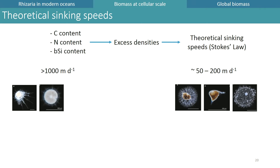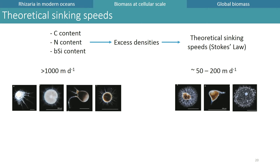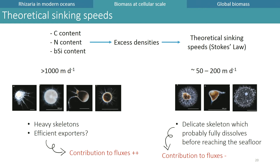Spumellaria and Arodaria have a much greater theoretical sinking speed than Phaeodaria of equivalent size, possibly because of differences in skeletal structure which is also less likely to dissolve along the way for Radiolaria. However, some Phaeodarian families that are more silica-dense also have a great theoretical sinking speed. All these taxa could be efficient exporters of organic carbon and biogenic silica to the deep ocean. On the other hand, the delicate skeletons of other taxa will probably entirely dissolve on the way down and never reach the seafloor.